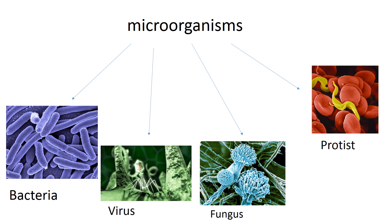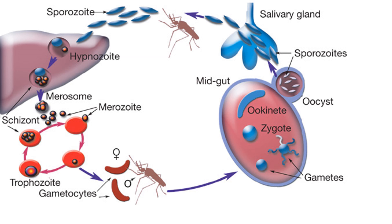Protists or Protoctista are usually single-celled creatures. They're eukaryotic like us, so they've got membrane-bound organelles and a nucleus. They don't really neatly fit into any group. The picture here shows a malaria parasite, which is carried by the mosquito and infects the red blood cells and the liver. The red blood cells eventually rupture and the debris and toxins that build up in the blood block the capillaries and blood vessels. To combat malaria we need to know a little about its life cycle, so let's have a quick look at the life cycle of malaria.